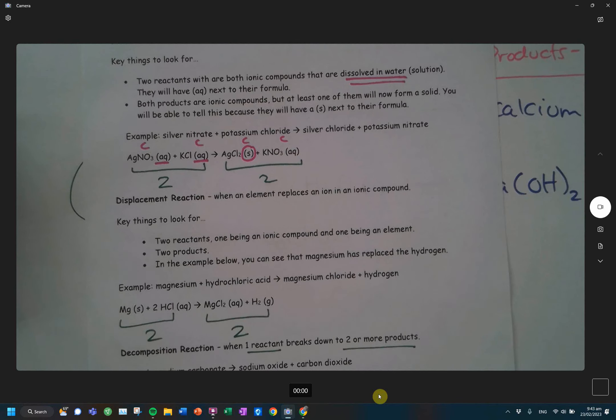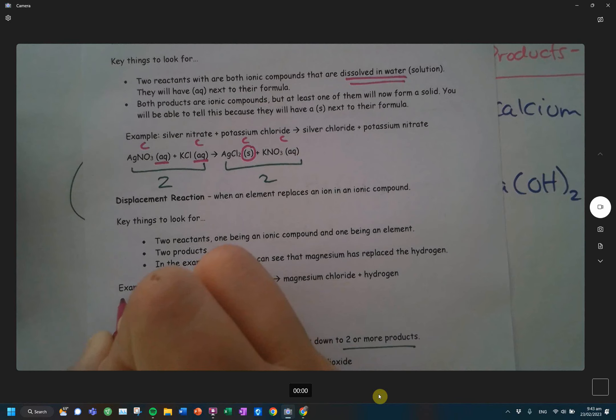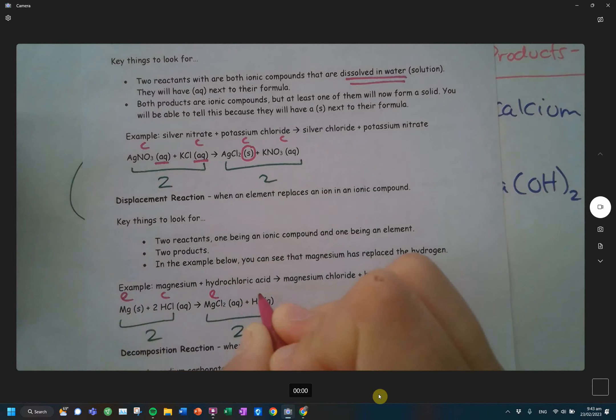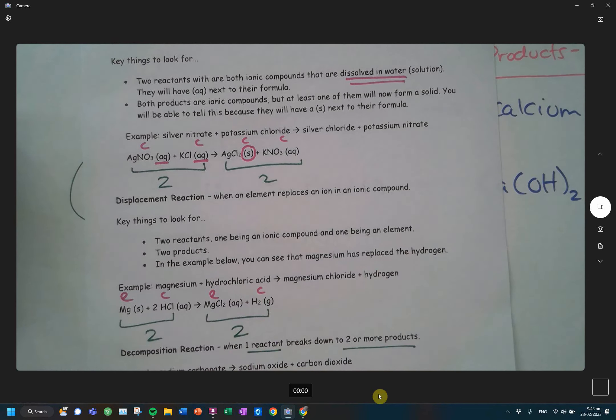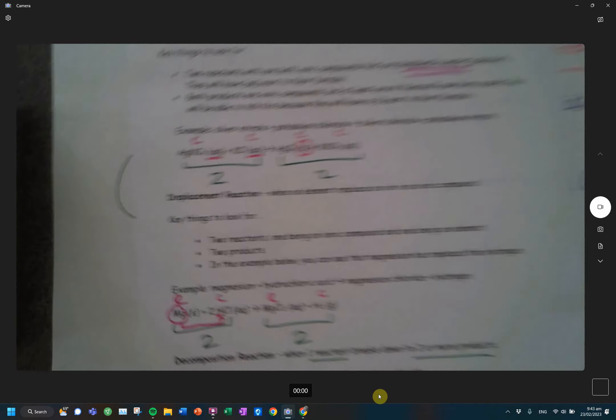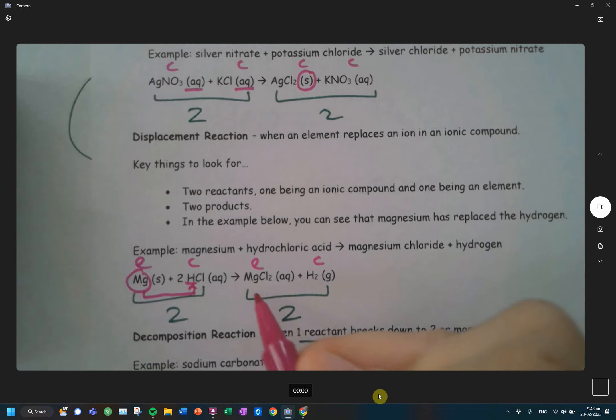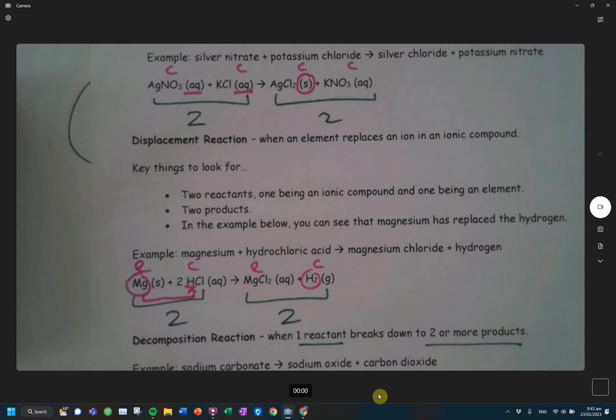In my displacement reaction, I will notice that I have an element and a compound, and an element and a compound. So what has happened here is my magnesium has kicked out the hydrogen. And when it's kicked out that hydrogen, I now have magnesium chloride. And then my hydrogen is now free in the element form. So that's what we're looking for.